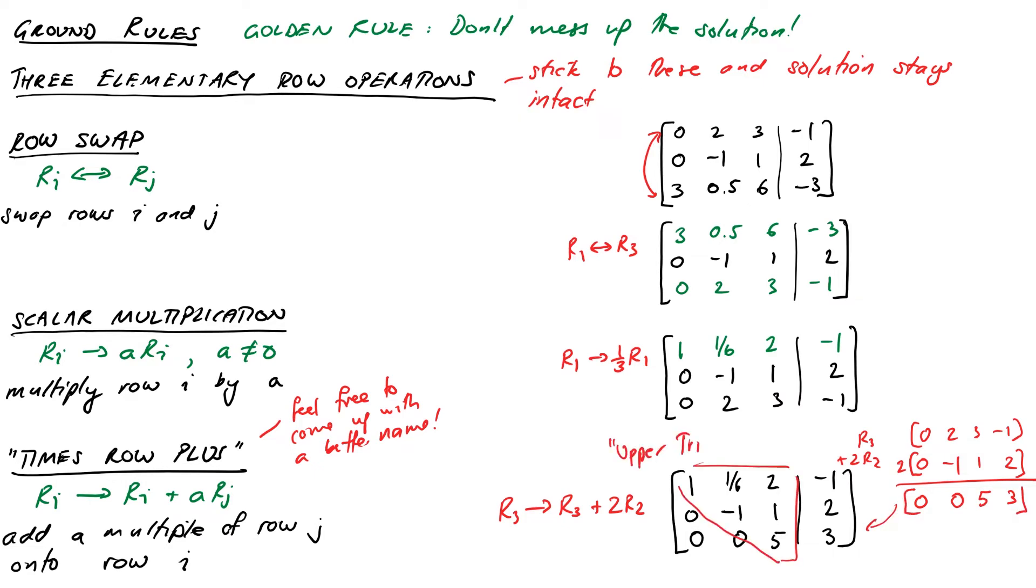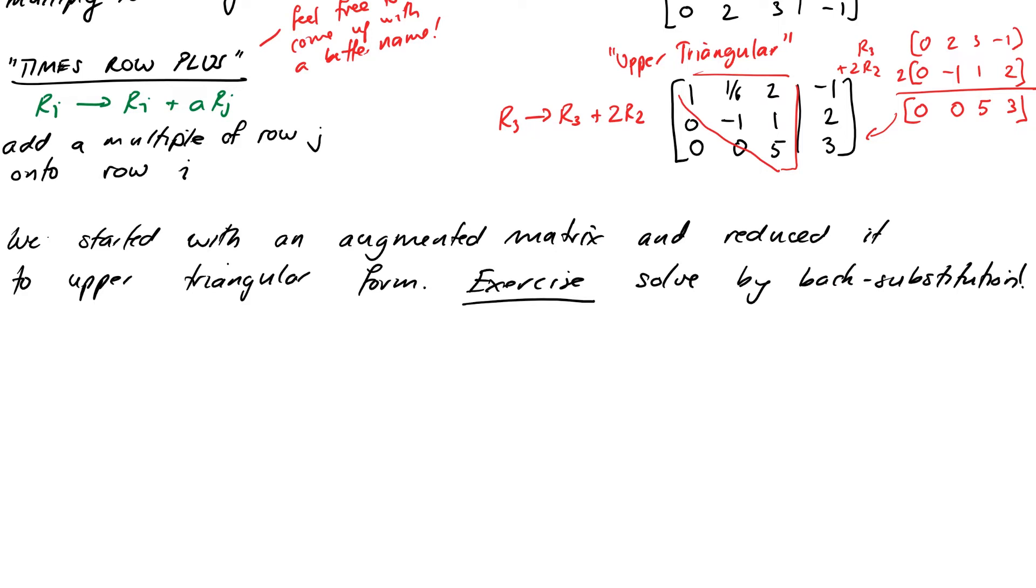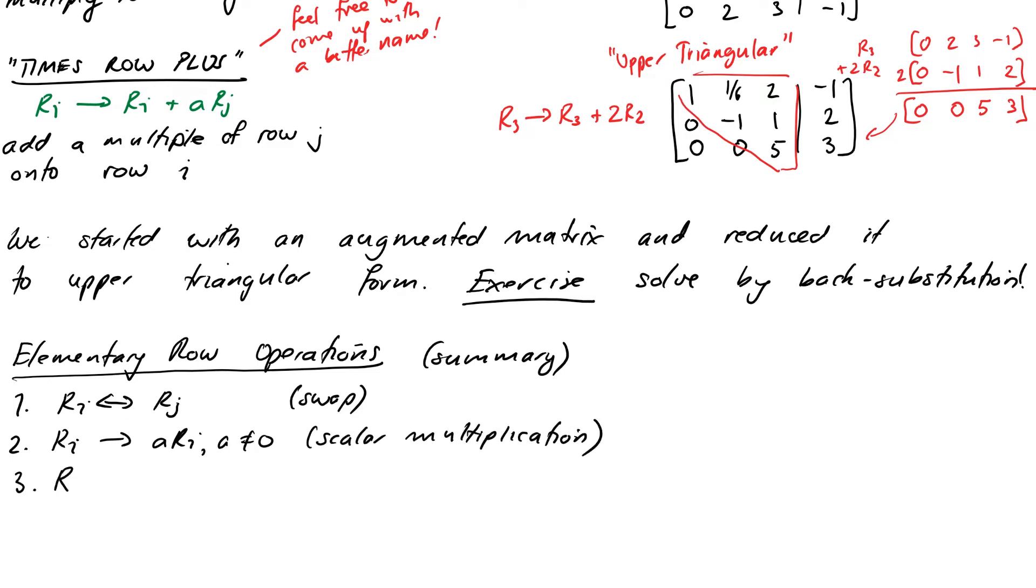Notice in our example, we actually started off with an augmented matrix and reduced it to our upper triangular form, the form we need to do back substitution. That's pretty cool. I haven't really taught you this method yet, but you can see that these row operations can work to give us something nice. Let's recap really quickly. The three elementary row operations are the row swap Ri ↔ Rj, the scalar multiplication Ri → A×Ri, and the times row plus Ri → Ri + A×Rj.